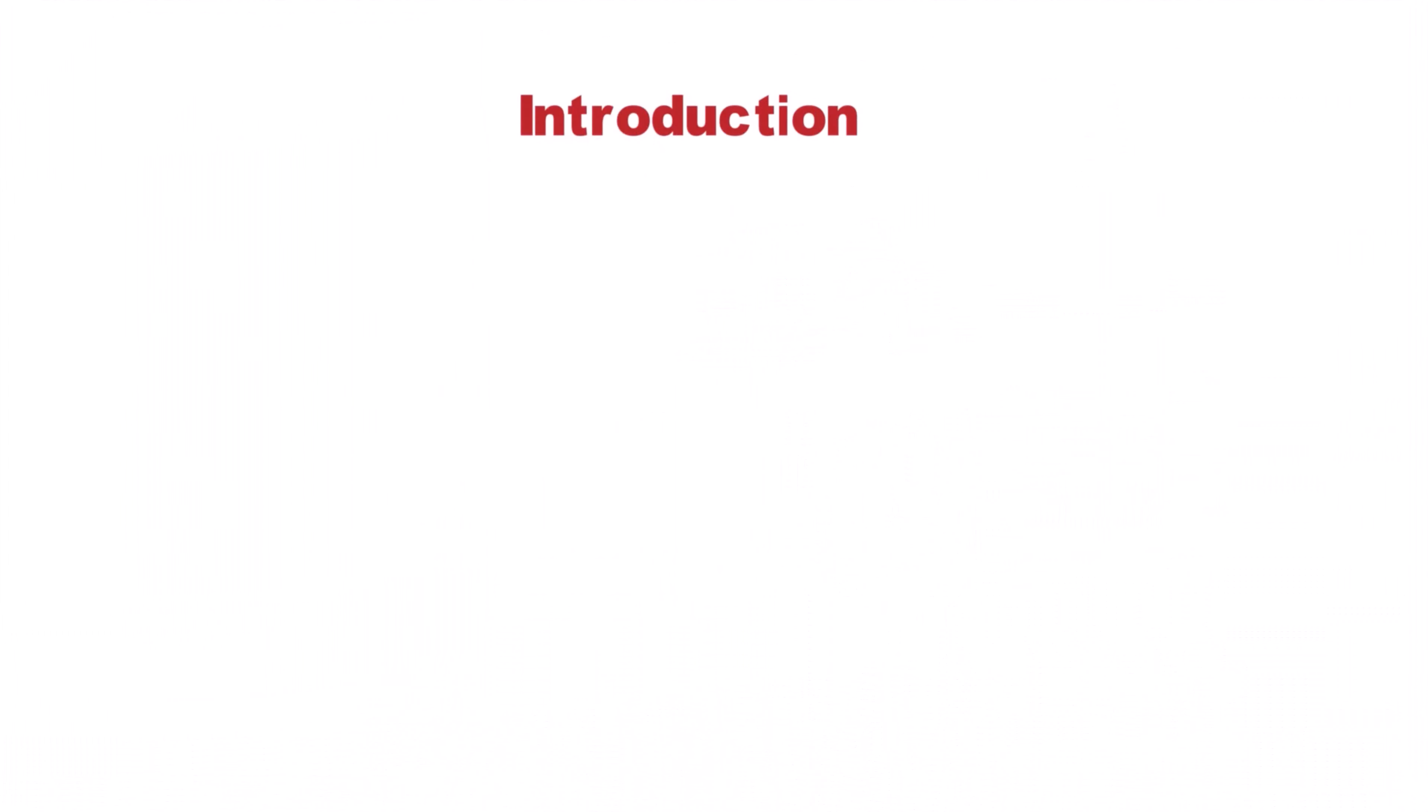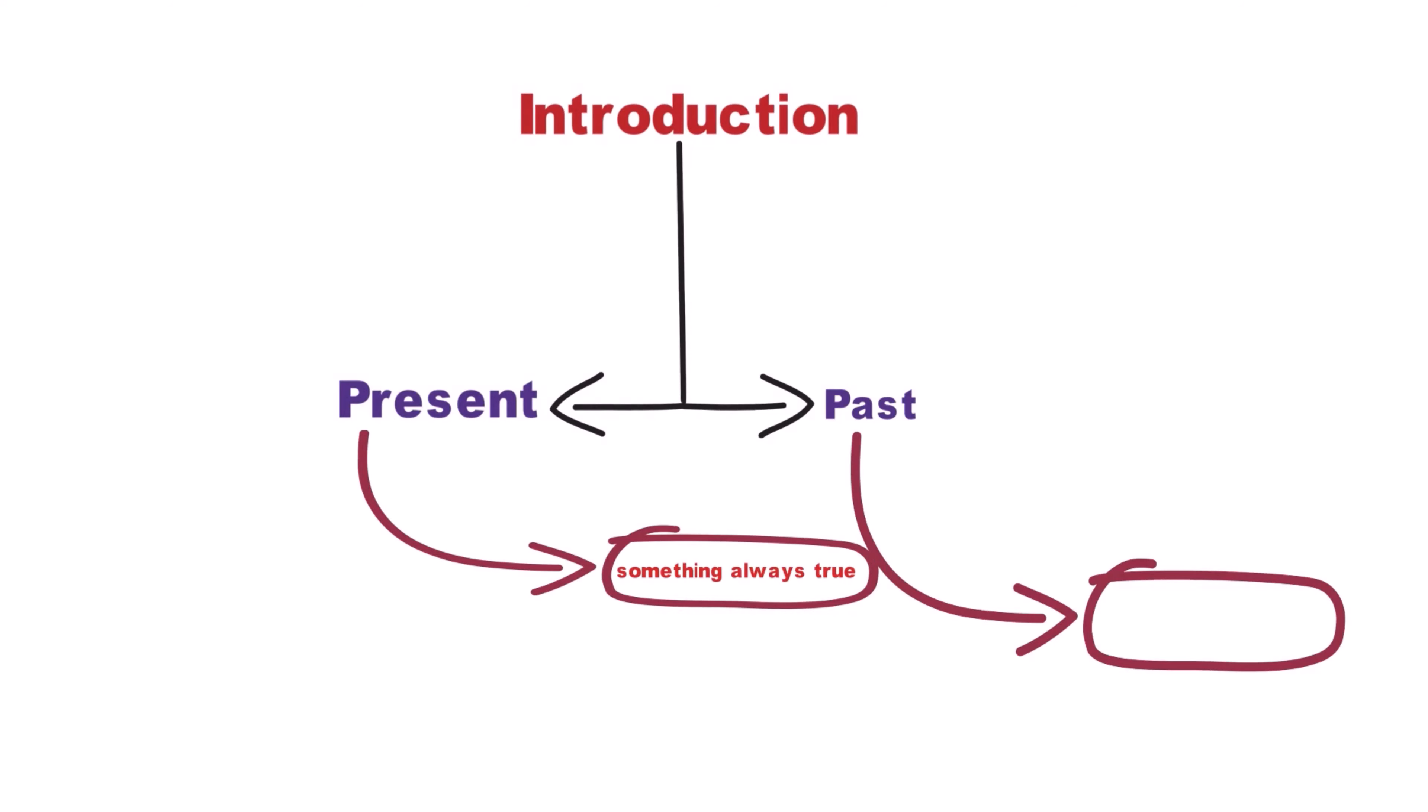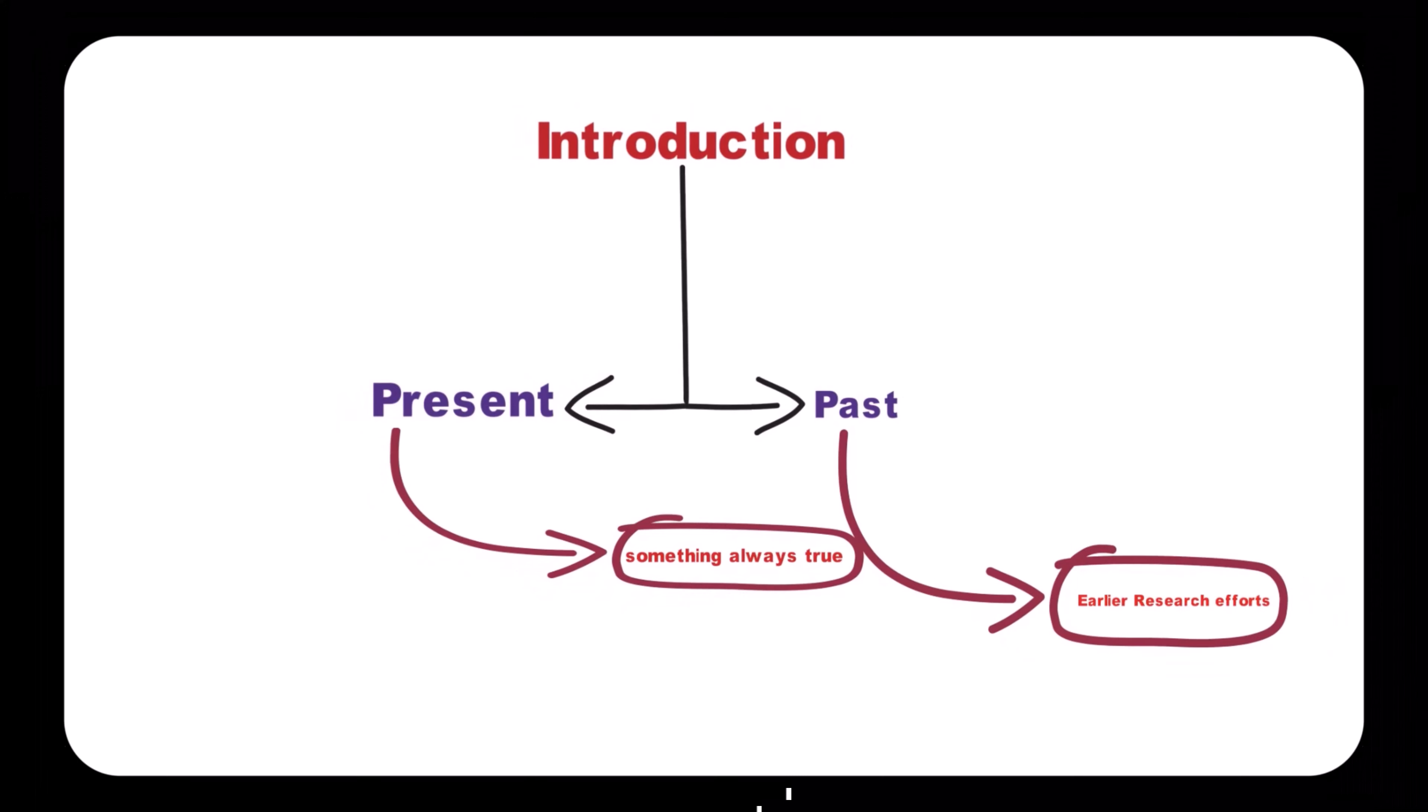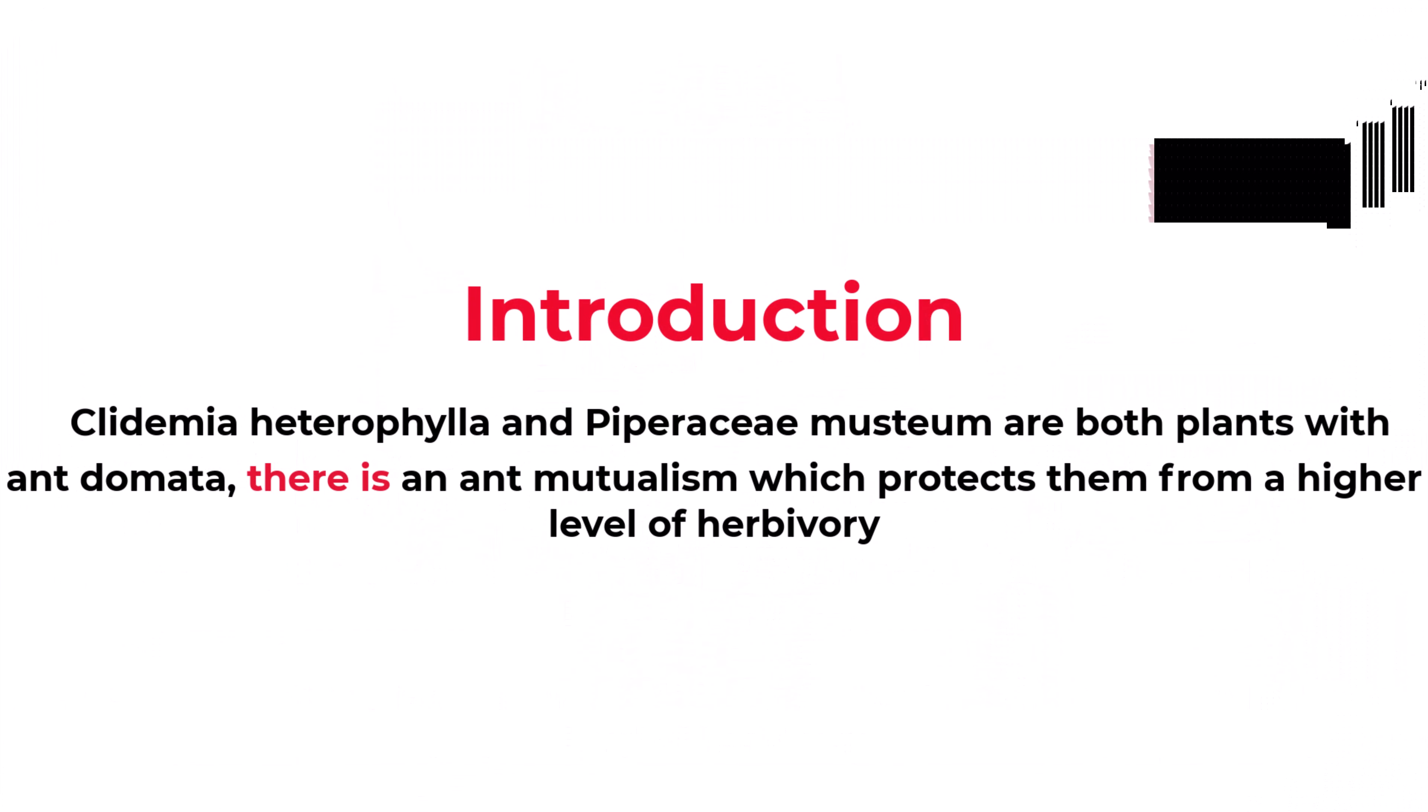Next, in the introduction section, it includes both the present and past tense. Present tense should be used when discussing something always true, while the simple past tense should be used when discussing earlier research efforts. For example, Clademia heterophila and Piperaceae mustium are both plants with ant domatia, meaning that there is an ant mutualism which protects them from a higher level of herbivory.